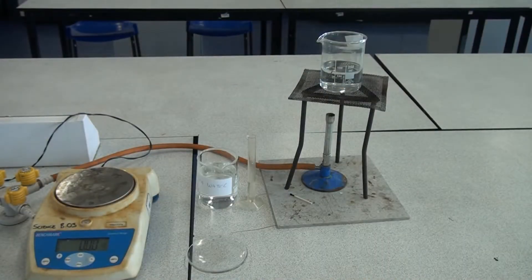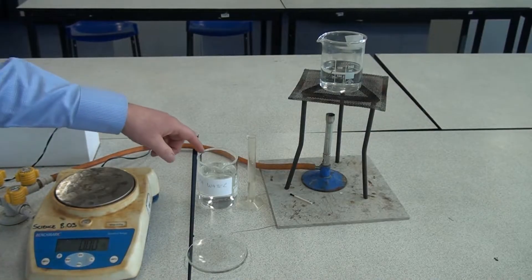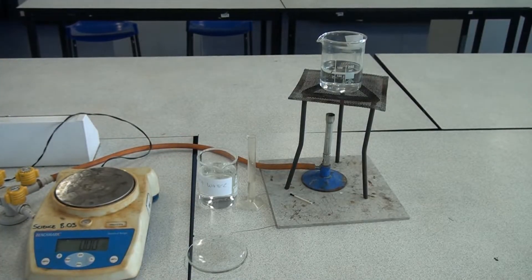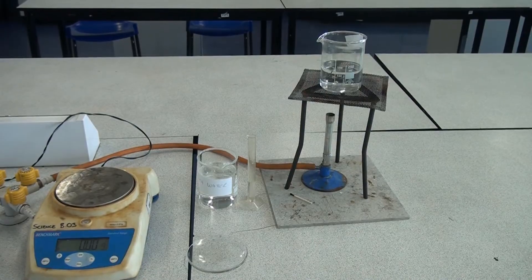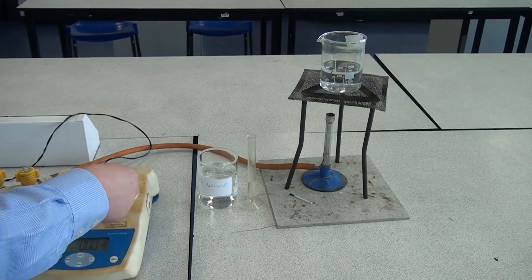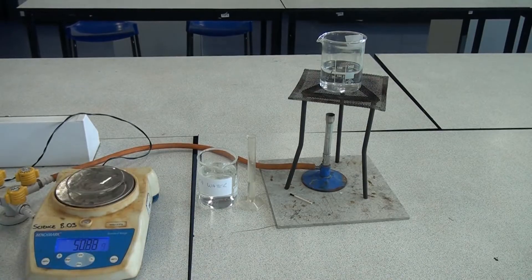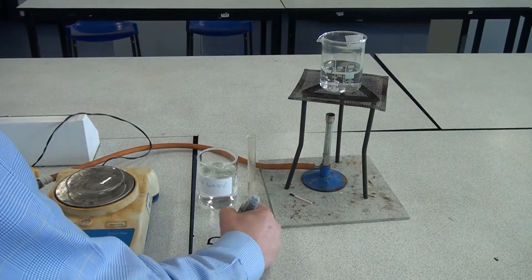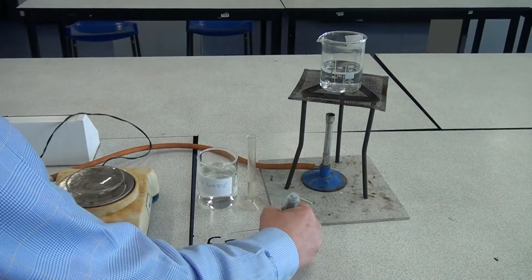To find out how much dissolved substances are in the seawater, I'm going to evaporate the water and see how much dissolved salts are left behind. So the first thing I'm going to do is find the mass of this watch glass and I'll write the mass down: 50.93 grams.